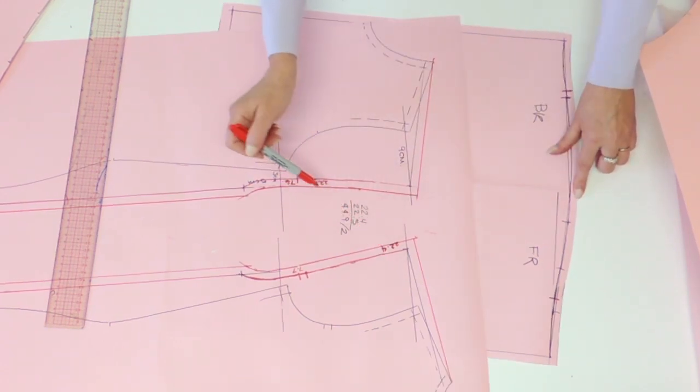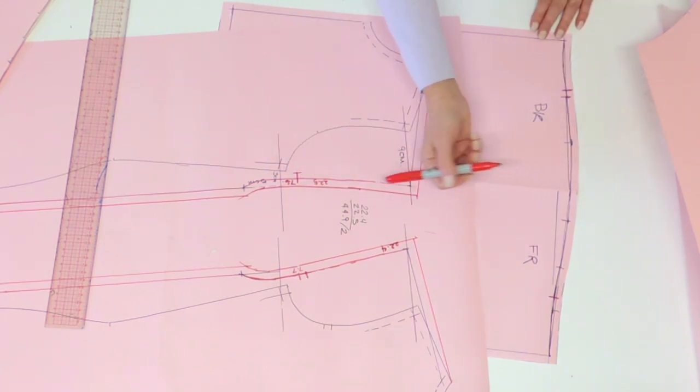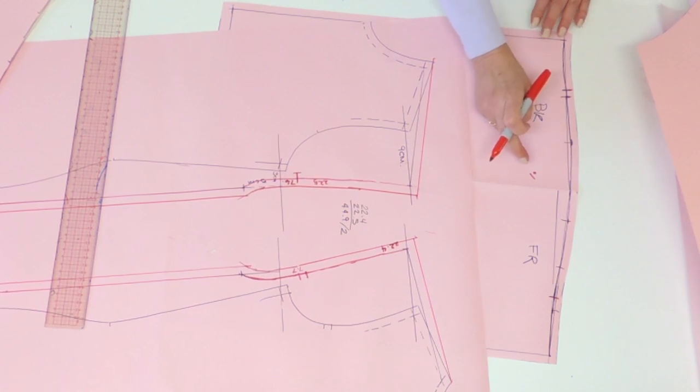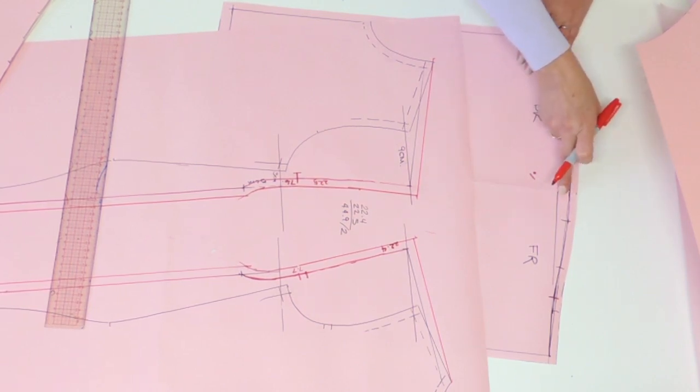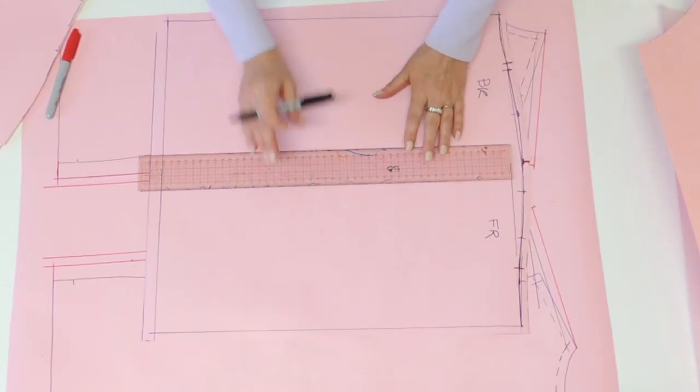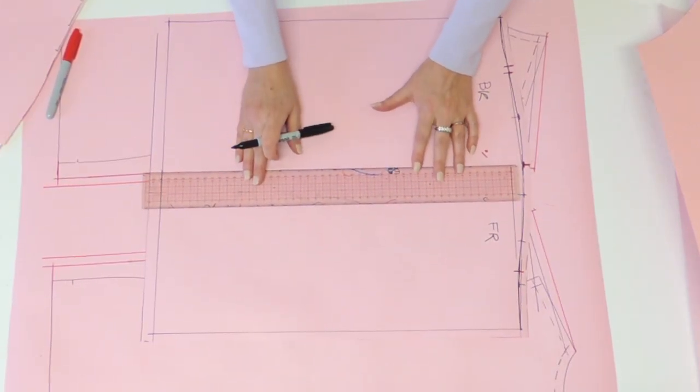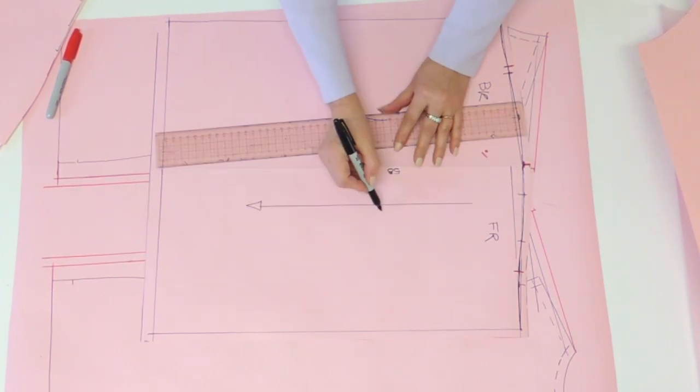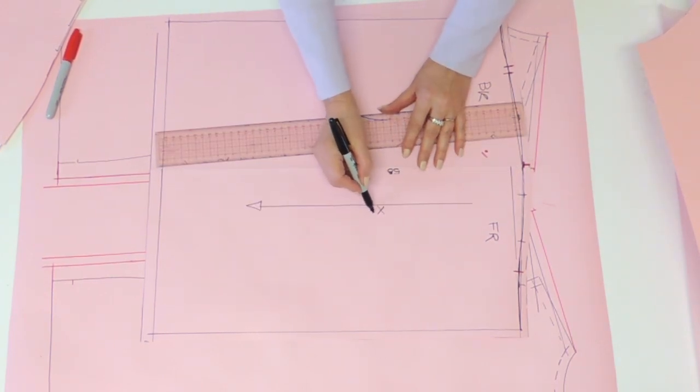If you remember I had a difference of one millimeter bigger on my front. In that case the difference between my front and my back armhole was only one millimeter. That means I'm going to put my notch or shoulder notch half the difference towards the smallest side. In that case half a millimeter towards the back. My sleeve piece is also finished. I'm just going to put my grain line and information. This pattern piece should be cut two times.